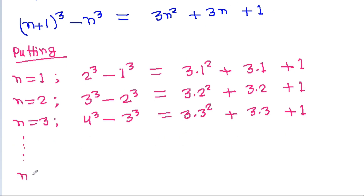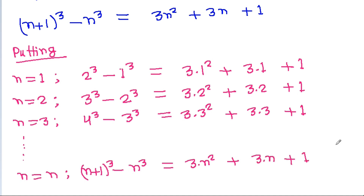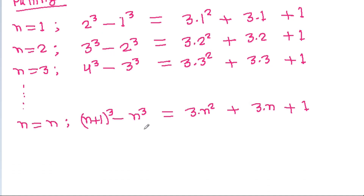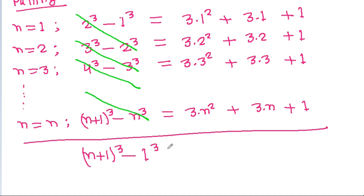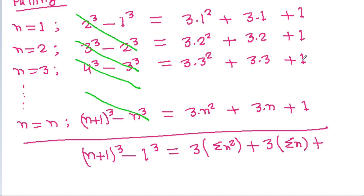Putting n equal to n: (n+1)³ minus n³ equals 3n² plus 3n plus 1. If we add all equations, then 2³ and minus 2³ cancel, 3³ and minus 3³ cancel, and in the same way all intermediate terms cancel. We get (n+1)³ minus 1³ equal to 3 times (1² + 2² + 3² + ... + n²), which is 3·sigma(n²), plus 3 times sigma(n) plus n.